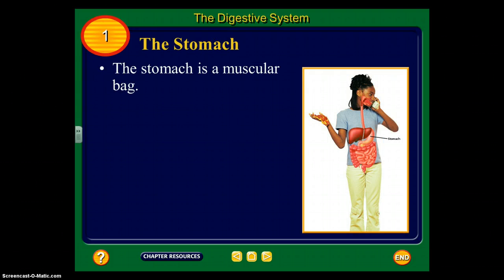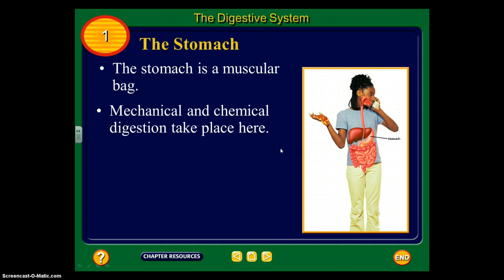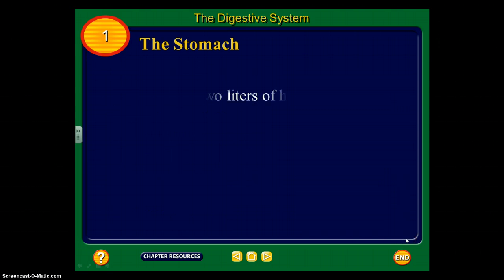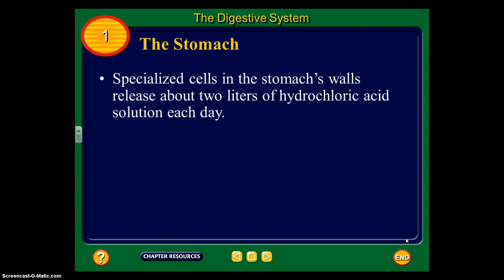The stomach is a muscular bag — this J-shape right here — where both mechanical and chemical digestion take place. Chemically, the food is mixed with enzymes and strong digestive solutions such as hydrochloric acid to help break it down. Specialized cells in the stomach's walls release about two liters of hydrochloric acid solution each day — about a pop bottle's worth of hydrochloric acid dumped in your stomach every day.